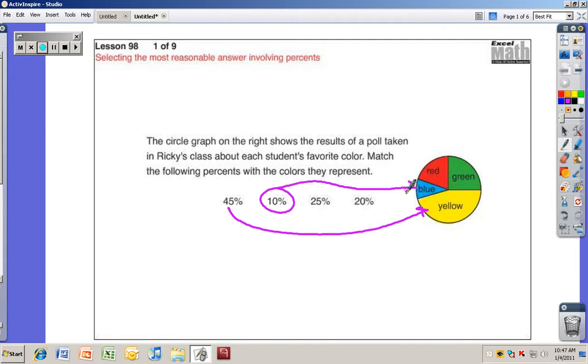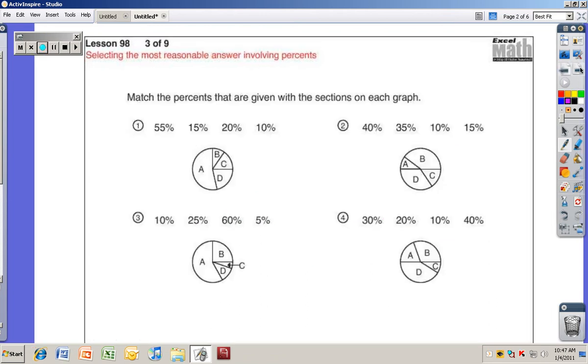The smallest percent. Now these two are a little bit trickier. We got 25 and 20%. Anybody want to take a stab at those? Taylor, what do you think? 25% is what color? Green. Look at that, you're in second grade doing sixth grade Excel. And so that makes 20% be for the red. That's pretty tough. You guys are smart.